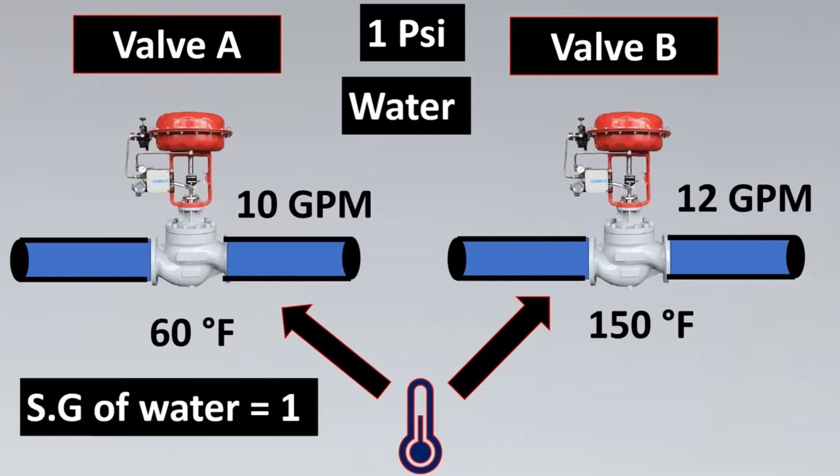So we will select 60 degree Fahrenheit. A lot of people ask that in CV definition why 60 degree Fahrenheit is specially taken. The answer is because the specific gravity of water is 1 at 60 degree Fahrenheit. So this will help greatly when we are doing CV calculations.